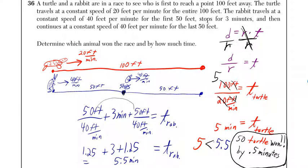Because 5 minutes is less than 5.5 minutes, the turtle won. How much did he win by? He won by 0.5 minutes.